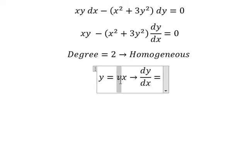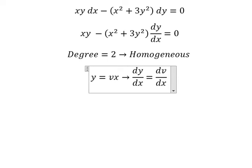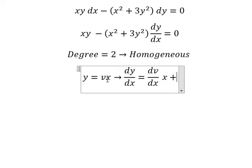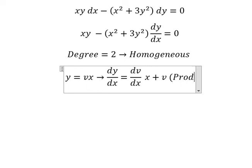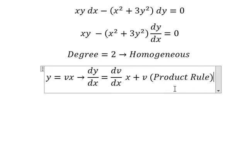First, the derivative of v. We have dv over dx multiplied by x. First, the derivative of x. We have number 1. So we have v. This is about the product rule of the derivative.